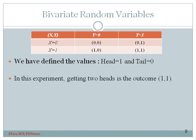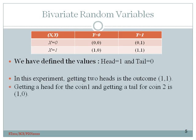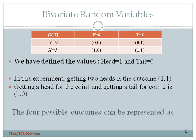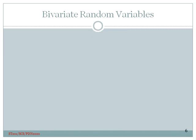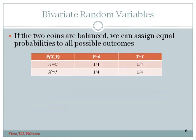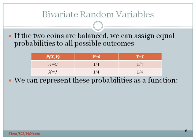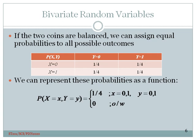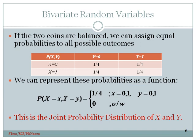In this experiment, getting two heads is the outcome 11, getting a head for the coin 1 and getting a tail for coin 2 is 10. The four possible outcomes can be represented as x, y pairs. If the two coins are balanced, we can assign equal probabilities to all possible outcomes. Then the table will become 1 over 4 in all cells. We can represent these probabilities as a function also. That is pxy equals 1 over 4 when x equals 0 or 1 and y equals 0 or 1, or 0 otherwise. This is the joint probability distribution of x and y.